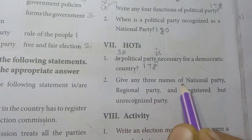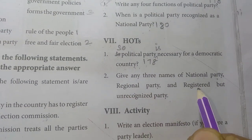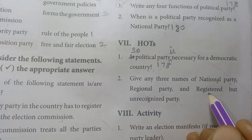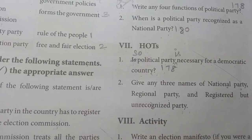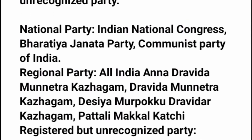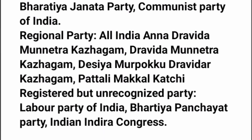Give any three names of national party, regional party, and registered but unrecognized party. National party: Communist Party of India. Regional party: All India Anna Dravida Munnetra Kazhagam, Desi Murpokku Dravida Kazhagam, Pattali Makkal Katchi. Registered but unrecognized party: Labour Party of India, Bharatiya Panchayat Party, Indian National Congress.